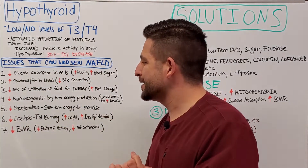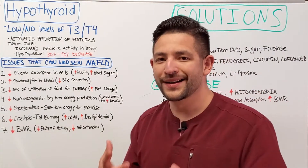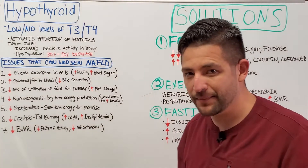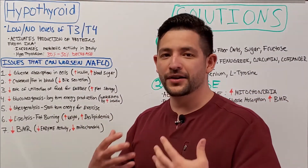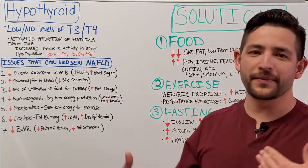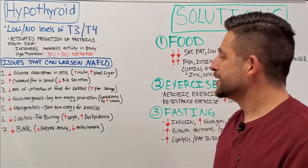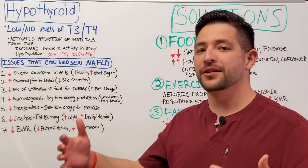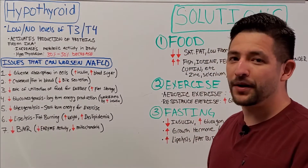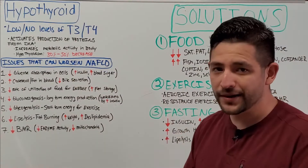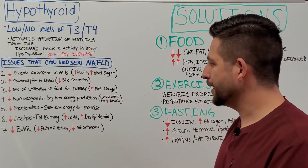Your liver's ability to perform gluconeogenesis — the process your liver uses to produce long-term energy throughout the day or while you're asleep — also gets dampened and decreases. This is part of the reason why many people with hypothyroidism develop fatigue or chronic exhaustion throughout the day.